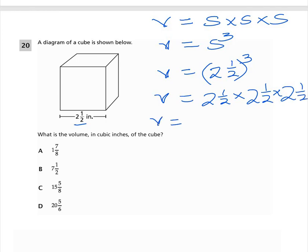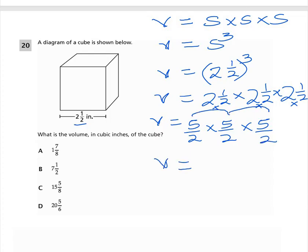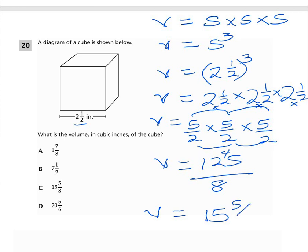Change everything to improper fractions: 2 times 2 plus 1 equals 5, so 2½ becomes 5/2. Volume is 5/2 times 5/2 times 5/2. That gives 5 times 5 is 25, times 5 is 125 for the numerator, and 2 times 2 is 4, times 2 is 8 for the denominator. So volume is 125/8. Dividing: 8 goes into 125 fifteen times with remainder 5, giving 15 and 5/8 cubic inches. The right option is C.